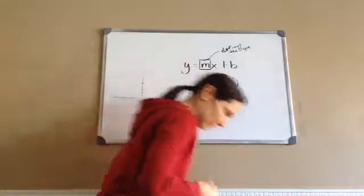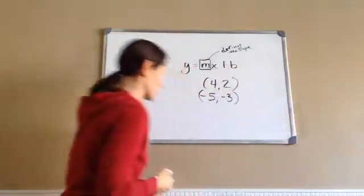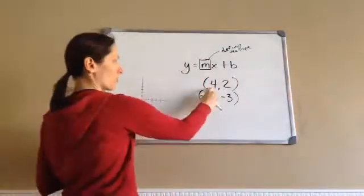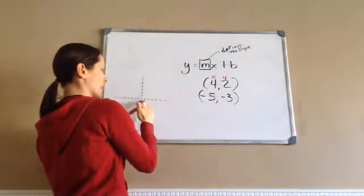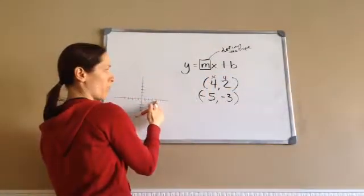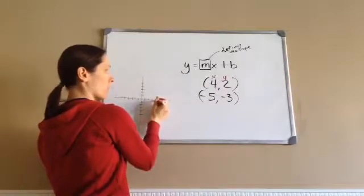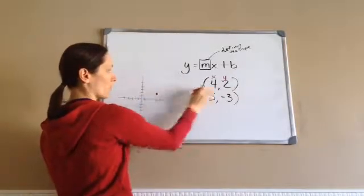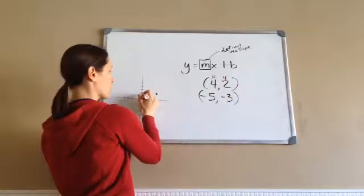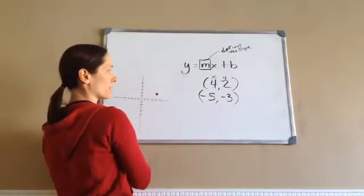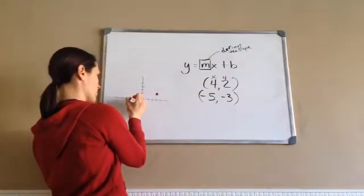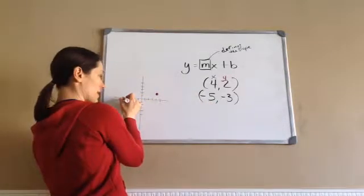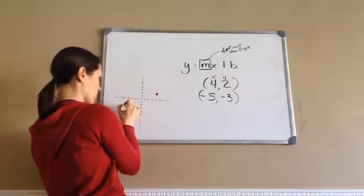I'm going to use a different color on this so we can really see. So I'm going to draw 4, 2, remember this is x and then this is y. So if x is 4, 1, 2, 3, 4, positive 4, and then up 2, that makes this spot right there. And then negative 5, negative 3, negative 1, 2, 3, 4, 5, and then negative 3 goes down 1, 2, 3.